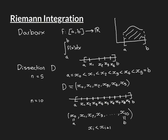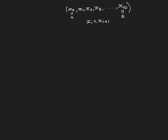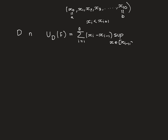We now want to see the definition of an upper Riemann sum and a lower Riemann sum. We have some fixed dissection D, and dissection D splits the closed interval AB into n pieces. The upper Riemann sum over our dissection D of our function f is defined to be the sum from i equals 1 to n of (xi minus xi minus 1) times the supremum over x in the interval [xi-1, xi] of the value of f of x.